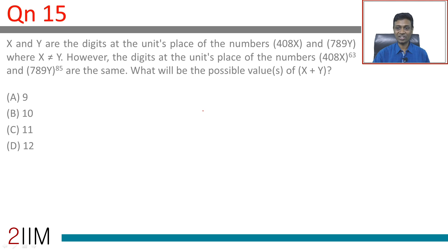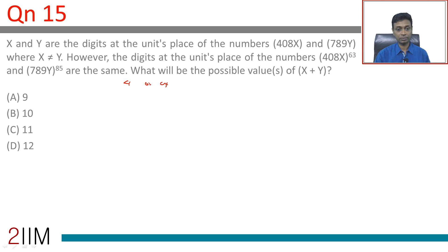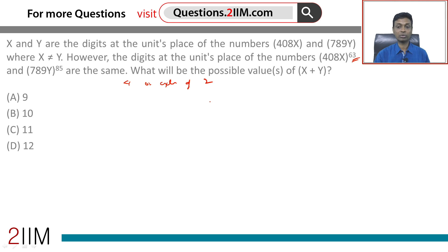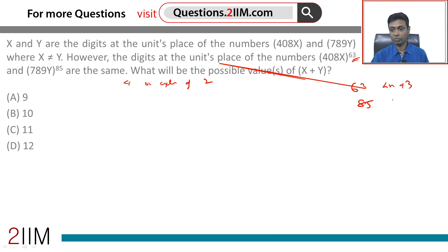We know that the unit digit goes in either cycles of 4 or cycles of 2. Now, 63 is of the form 4n plus 3, and 85 is of the form 4k plus 1. It is a very interesting point of distinction that the units digit of both of these are the same.